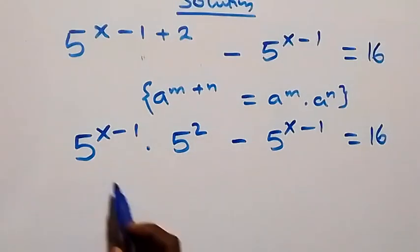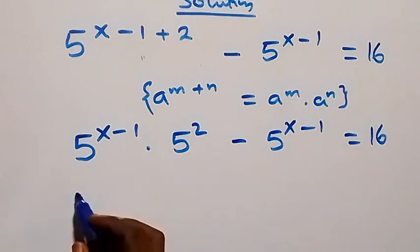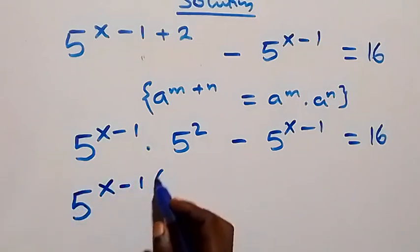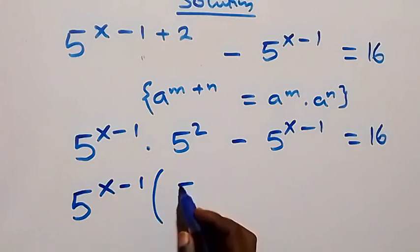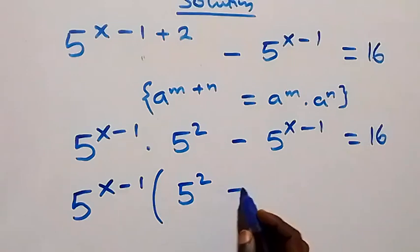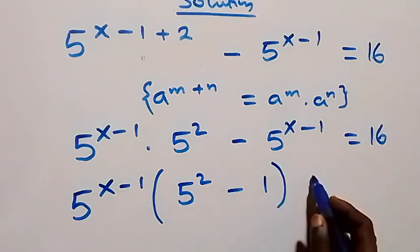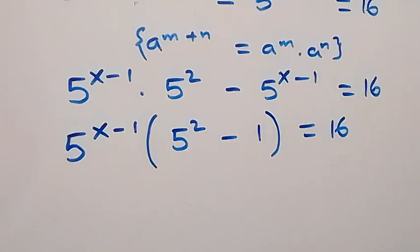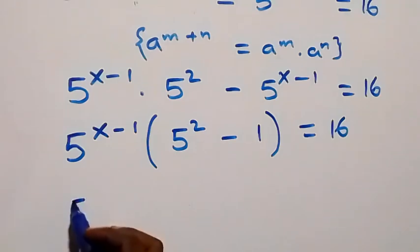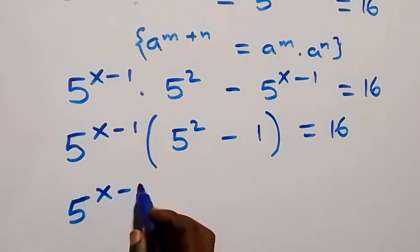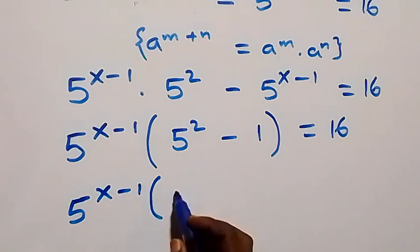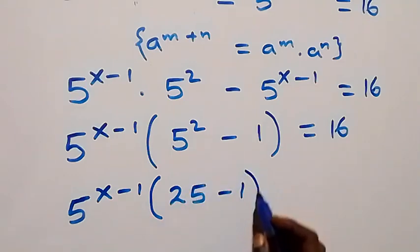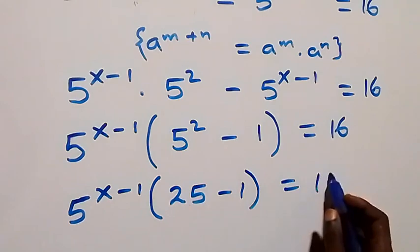Here, 5 raised to power x minus 1 is common, so we factor it out. We have 5 raised to power x minus 1 into bracket: 5 squared minus 1, left here, equals 16. That is, 5 raised to power x minus 1 into bracket: 5 squared is 5 times 5, which is 25, minus 1, equals 16.